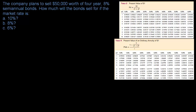In this problem the company plans to sell $50,000 worth of four-year 8% semi-annual bonds. How much will the bond sell for if the market rate is 10%, 8%, and 6%? Let's think about what's happening.